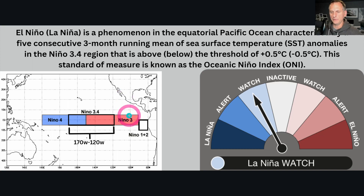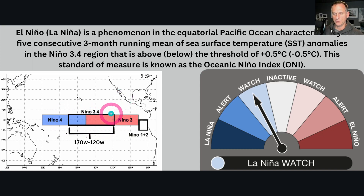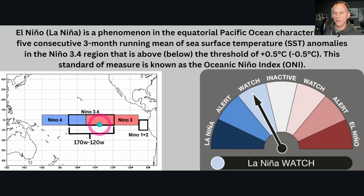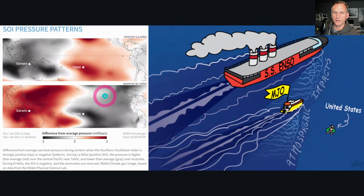First of all, what is a La Niña or El Niño? We measure the temperature anomaly across the equatorial Pacific — this is plus and minus five degrees north and south latitude right along the equator, between 170 and 120 west. This is the area that we measure from, and right now we are in La Niña watch, which means below-average water temperatures across the equatorial Pacific Ocean.